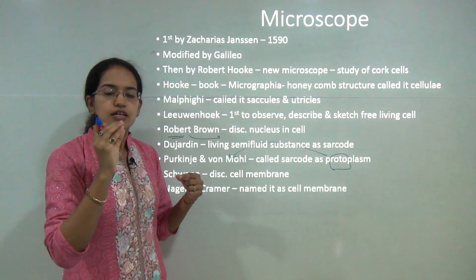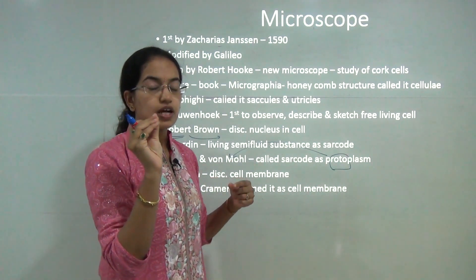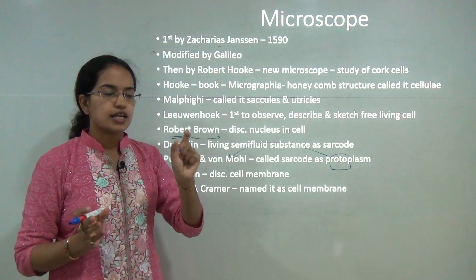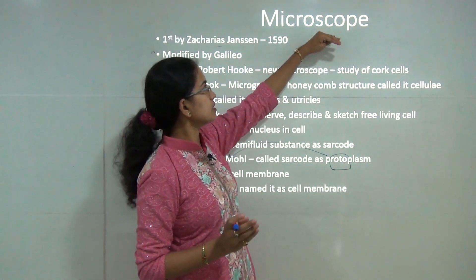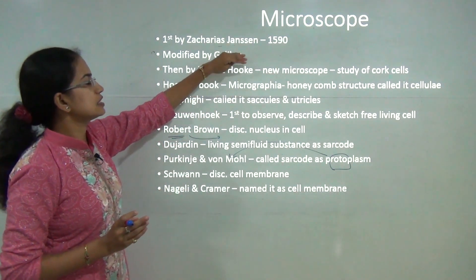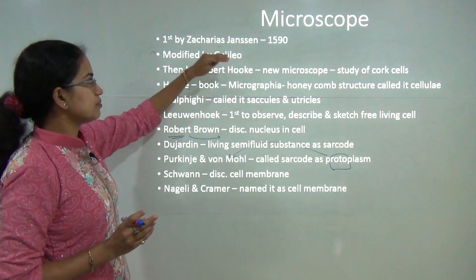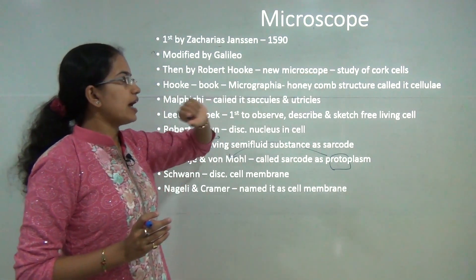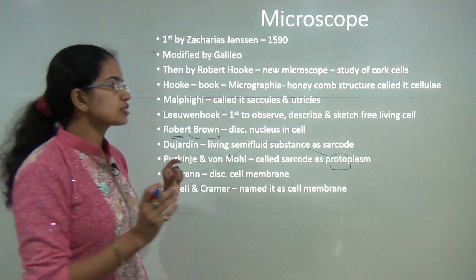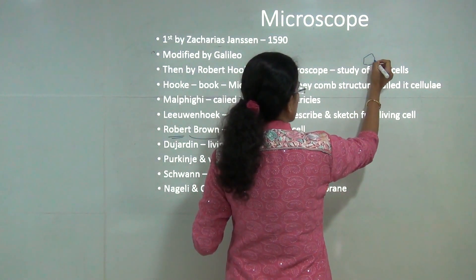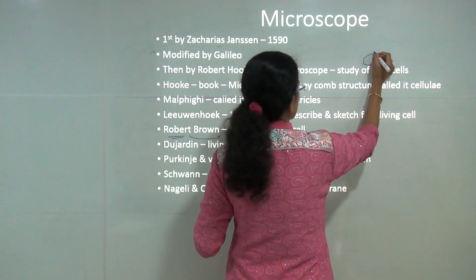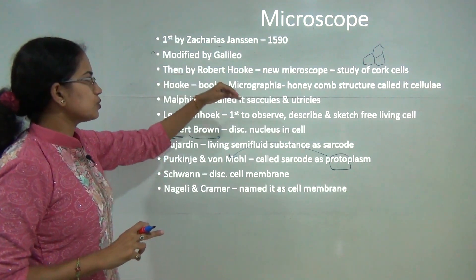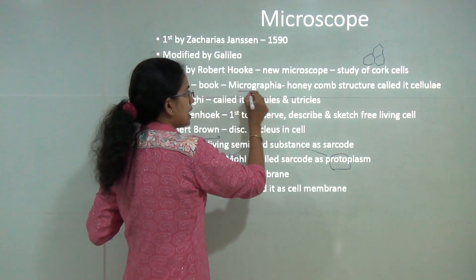Cells are very minute, so it is nearly impossible to see a cell with the naked eye. The instrument required is the microscope, which was first discovered by Jensen in 1590, later modified by Galileo and then by Robert Hooke. Hooke introduced a new microscope and used it to study cork. The cork had a structural arrangement in the form of a honeycomb structure, described by Hooke in his book Micrographia.